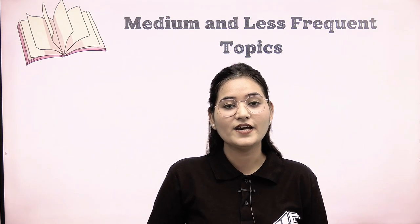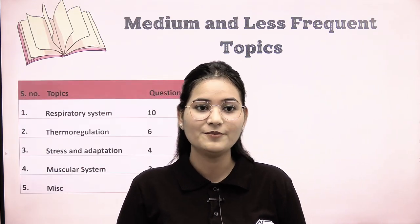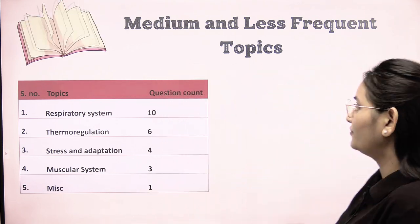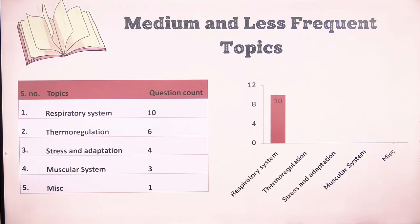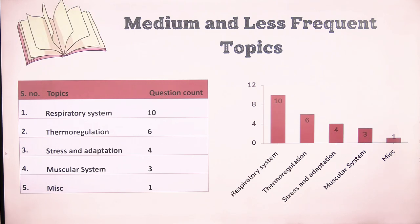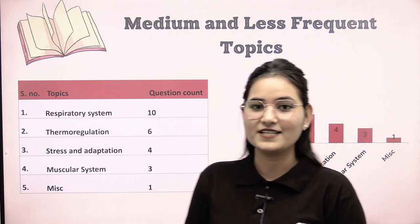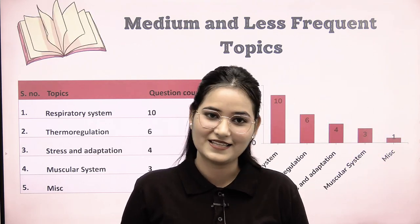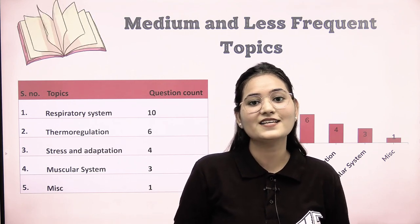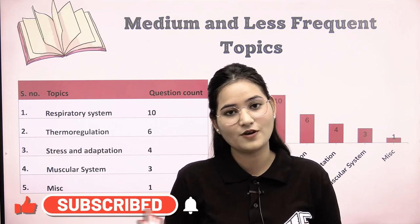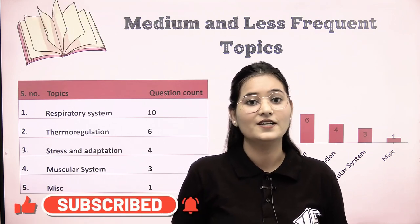The remaining medium and less frequent topics include 5 areas: Respiratory System with 10 questions, Thermoregulation with 6 questions, Stress and Adaptation with 4 questions, Muscular System with 3 questions, and Miscellaneous with 1 question — where miscellaneous covers concepts from more than 2 topic categories.